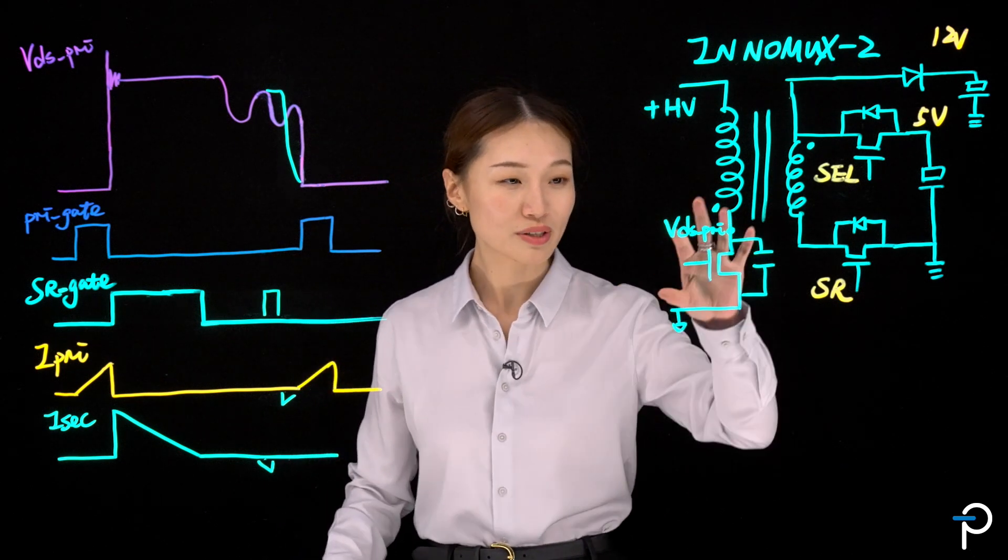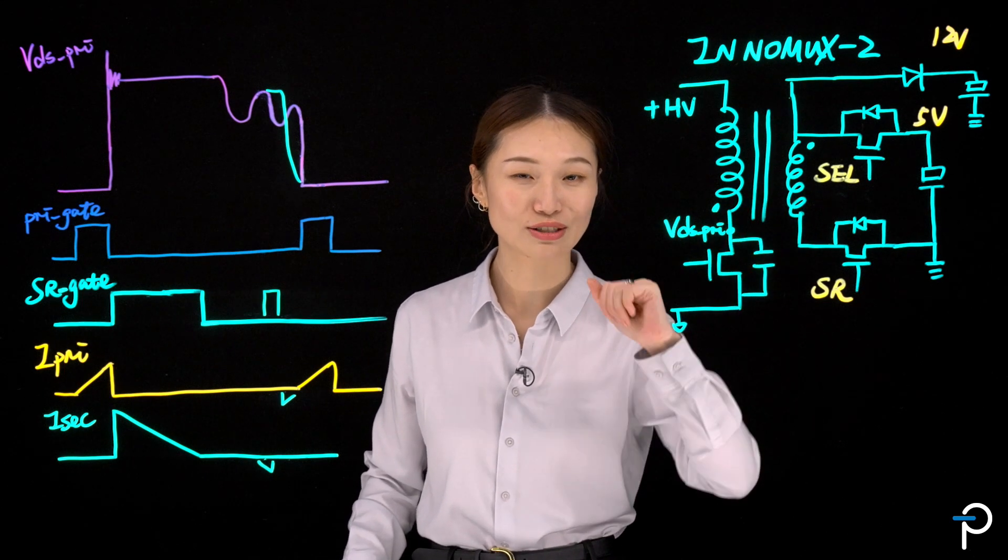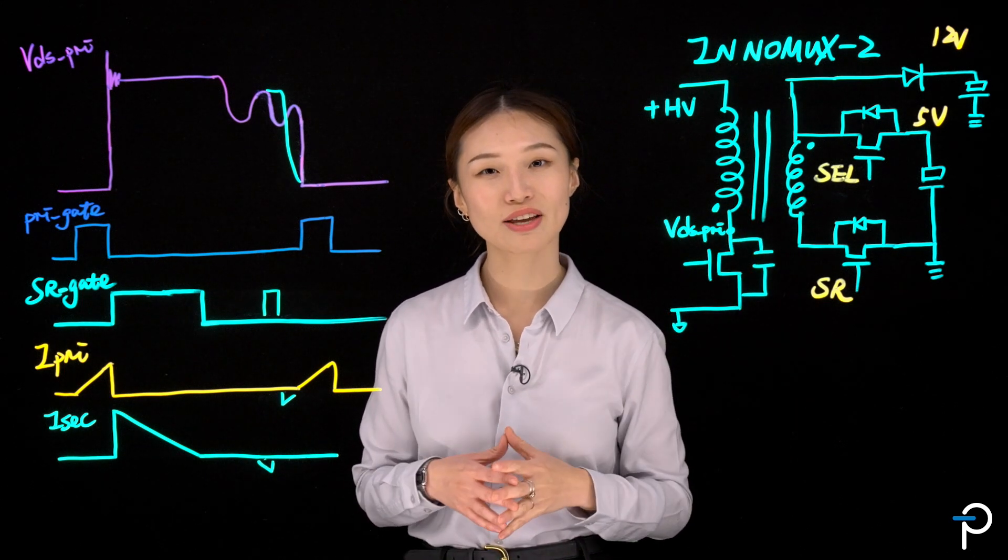And for low line, we design it to run at CCM to reduce the RMS current. So at low line, when CCM occurs, the voltage across the switch isn't too high. So not having ZVS shouldn't be a problem.